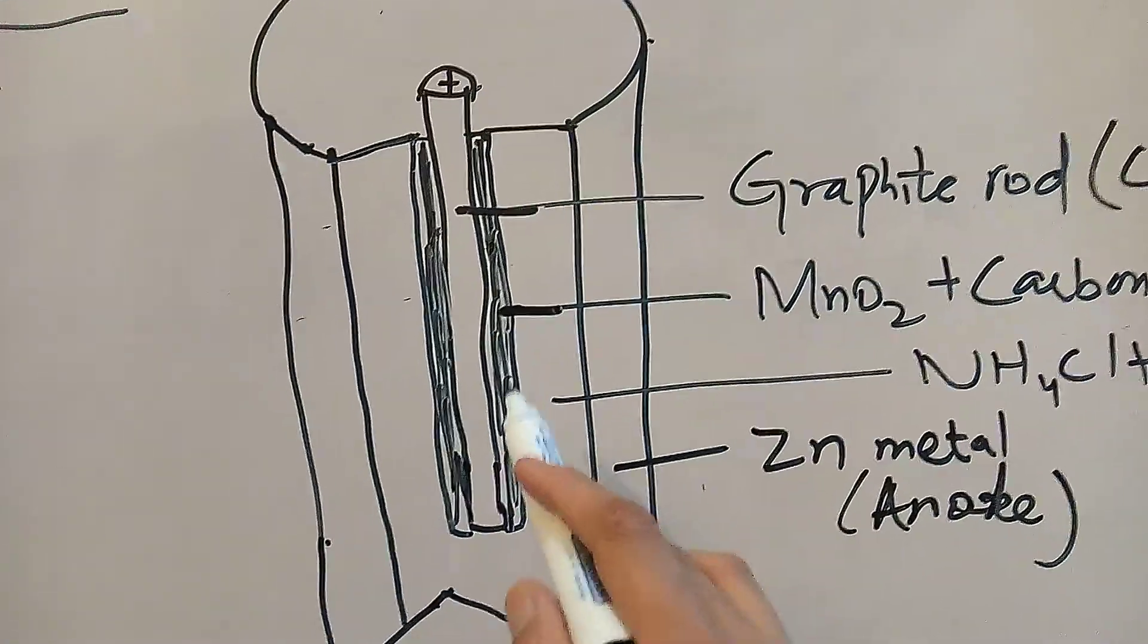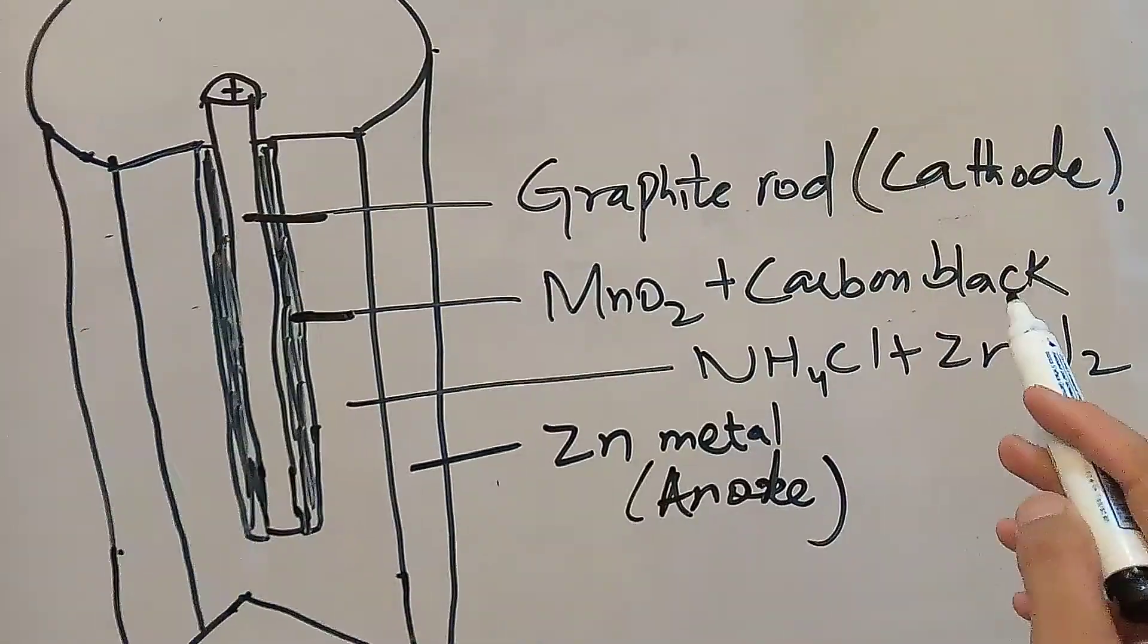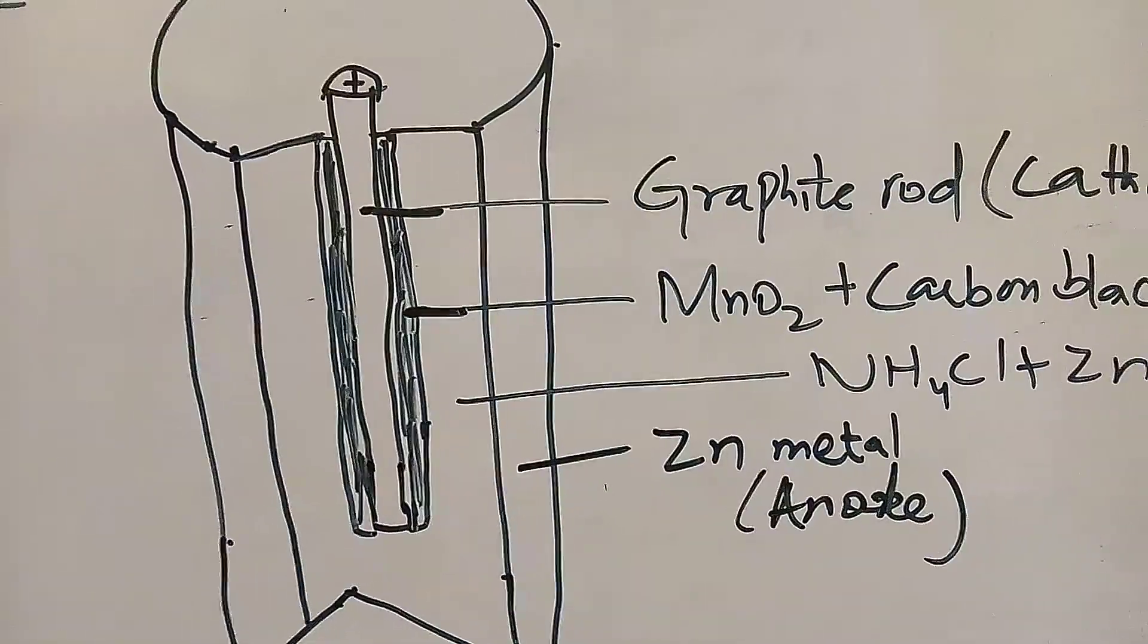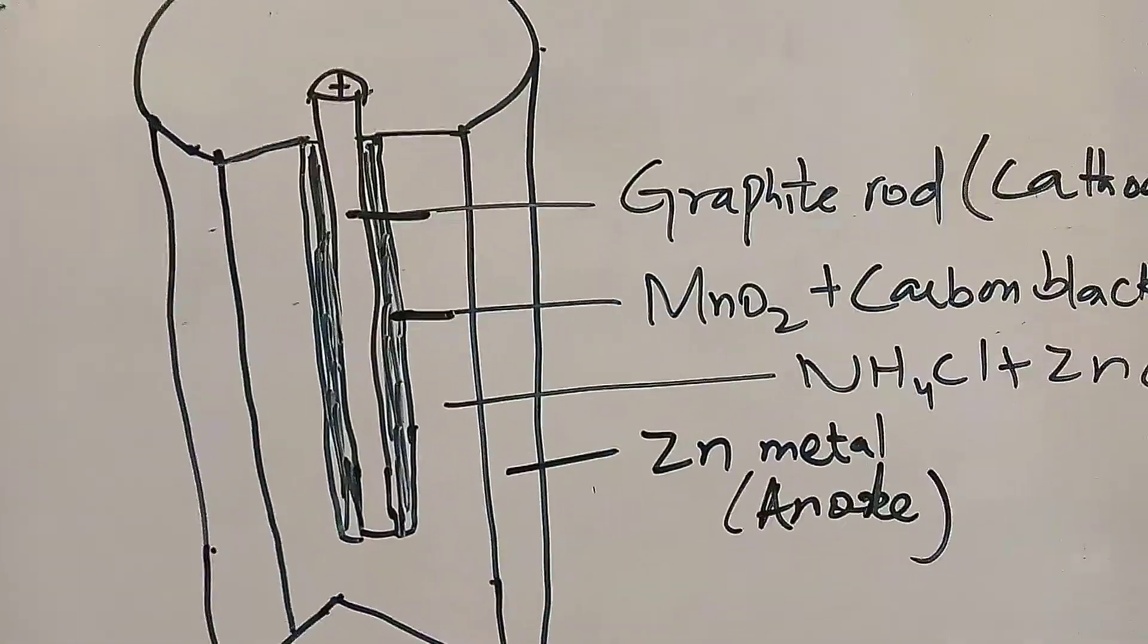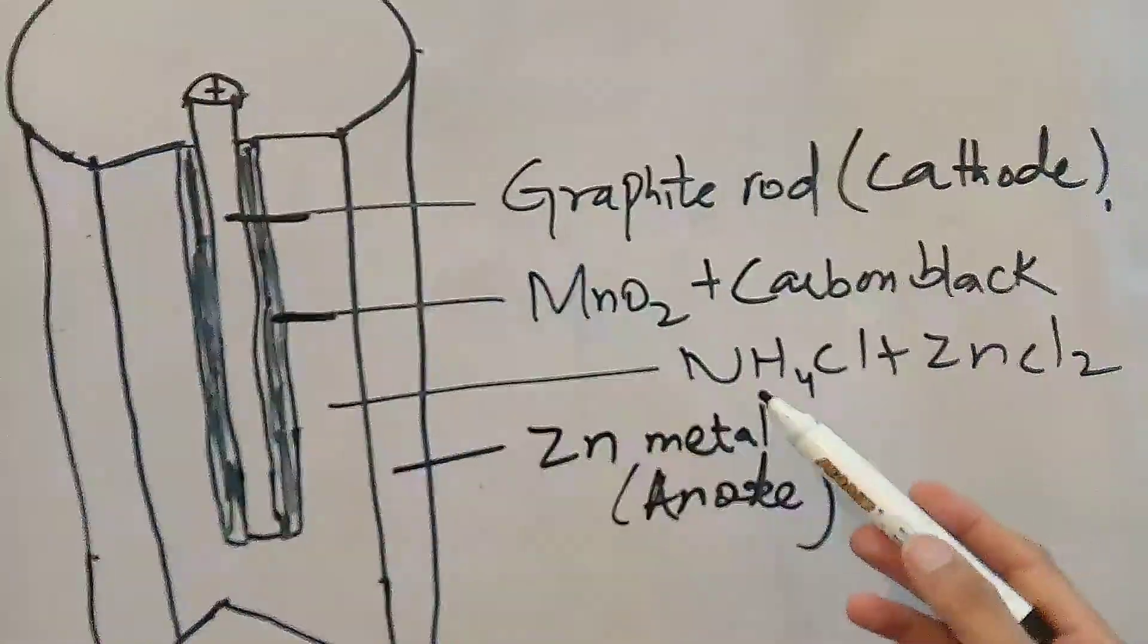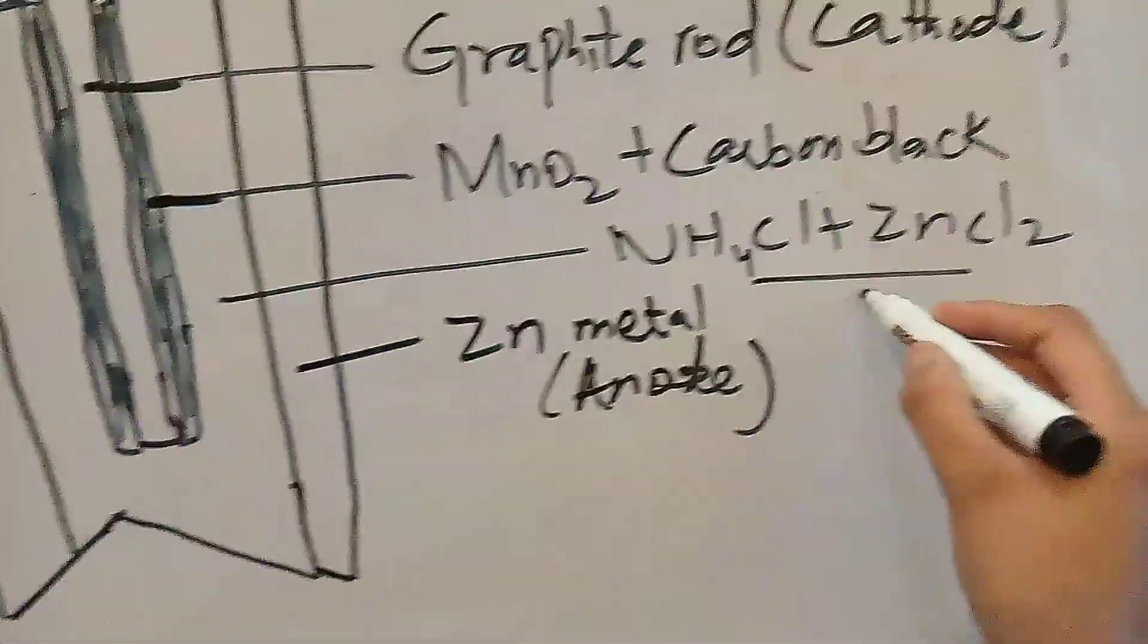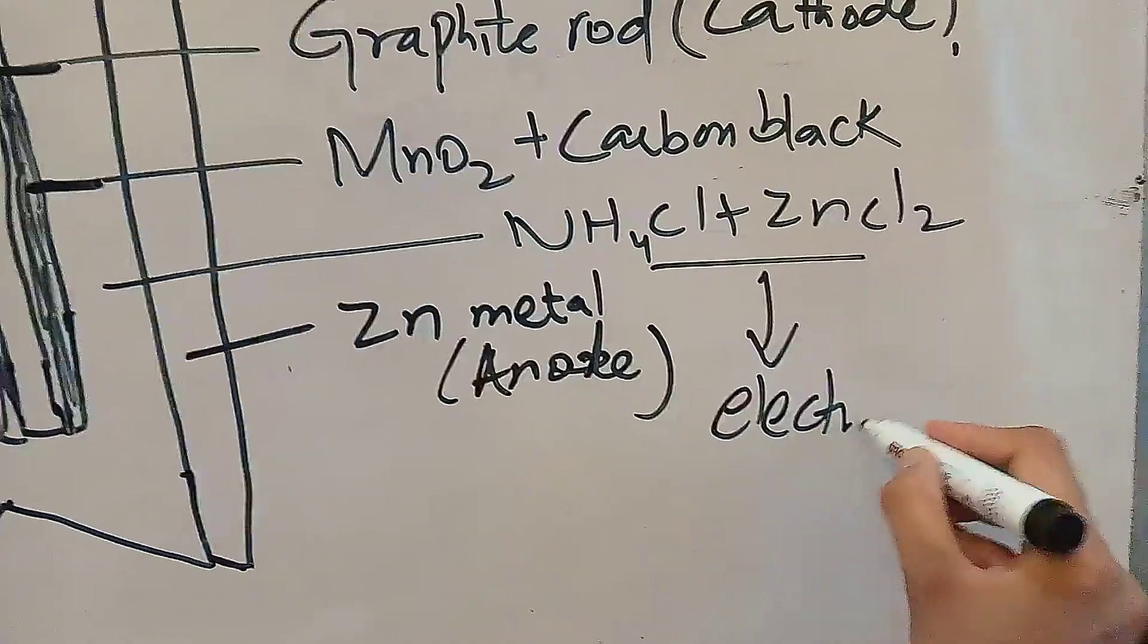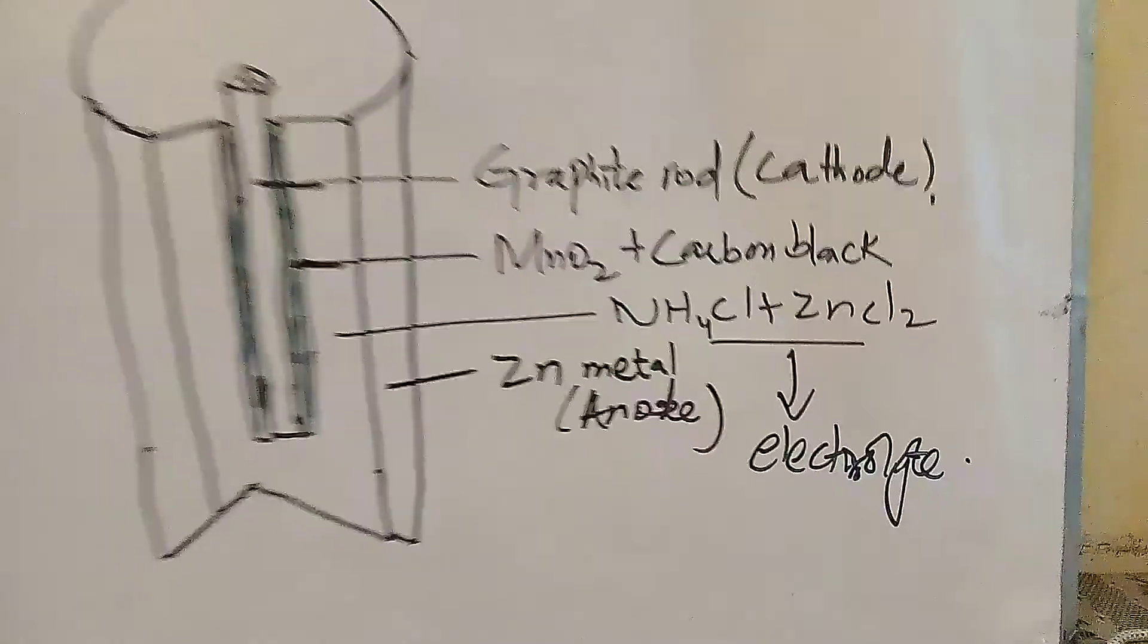This is the mixture of ammonium chloride and zinc chloride. This ammonium chloride and zinc chloride will act as an electrolyte. So this is the construction of dry cell.